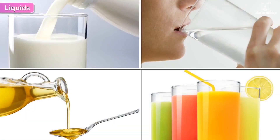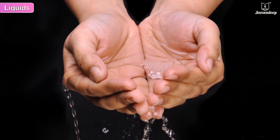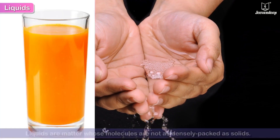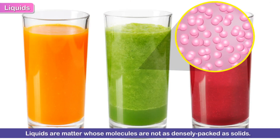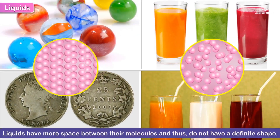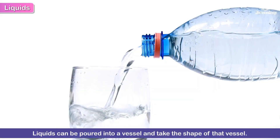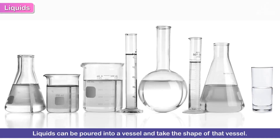Liquids. Can you hold water in your palms? You can't, because it will flow out of your fingers. Liquids are matter whose molecules are not as densely packed as solids. They occupy a definite space. However, unlike solids, they have more space between their molecules and thus do not have a definite shape. Liquids can be poured into a vessel and take the shape of that vessel.